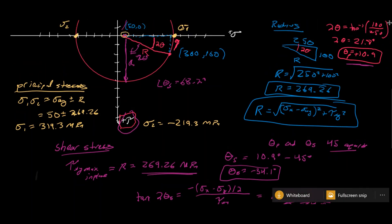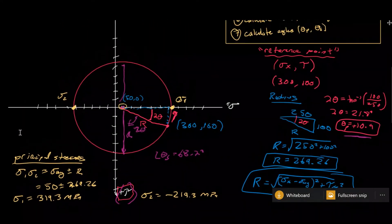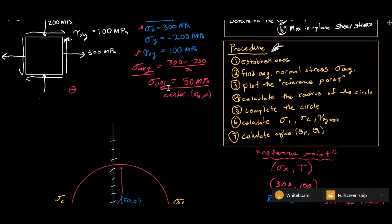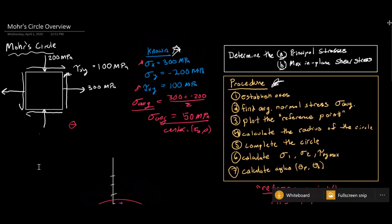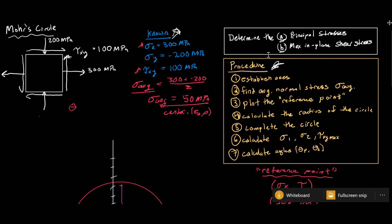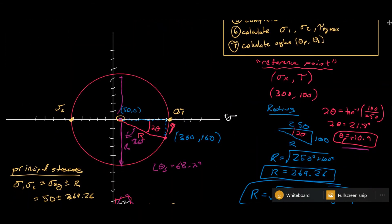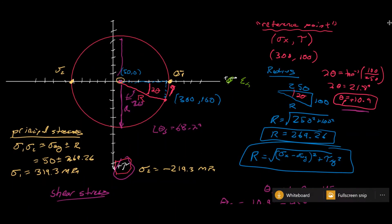That's how we do Mohr's circle. The key things to know are how to find the center and the radius — the rest is straightforward. Mohr's circle is also useful for strain transformation, using the same steps, but replacing normal stress with normal strain and shear stress with γ/2. We'll cover strain transformation in another video.